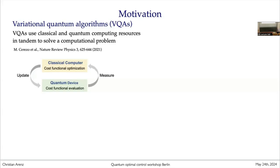My background was quantum control theory, but I moved more into quantum algorithm design. What caught my attention was the development of so-called variational quantum algorithms. For those not familiar, I recommend the review article by Cerezo et al., where they describe very well what these variational algorithms are. On a high level, you have a quantum device that calculates the cost function telling you how far you are from a solution to a computationally challenging problem. Then you hook up that quantum device to a classical computer and solve the optimization problem in this iterative loop.